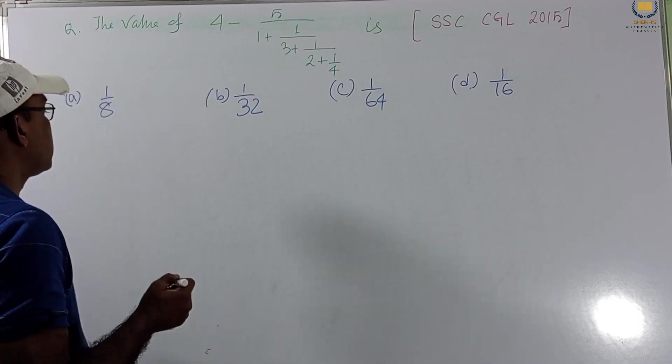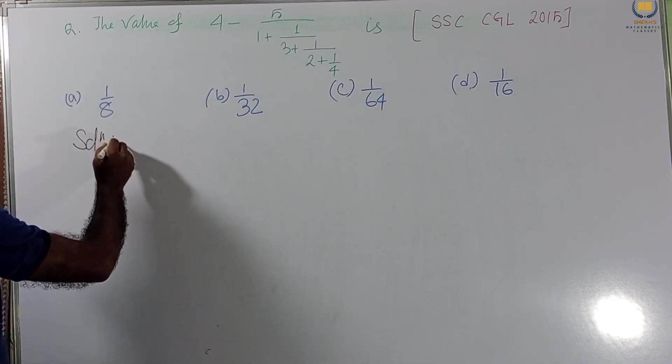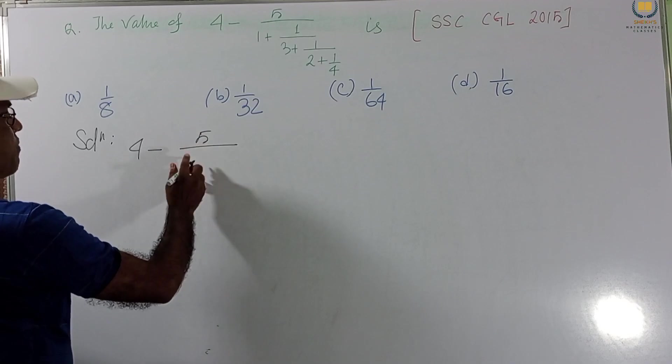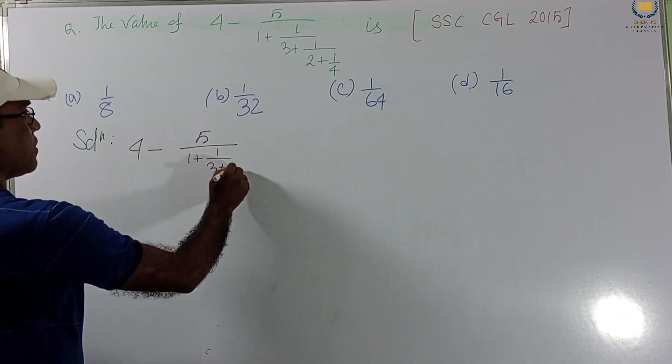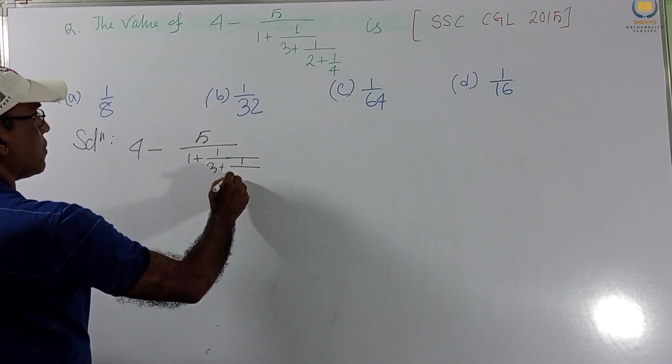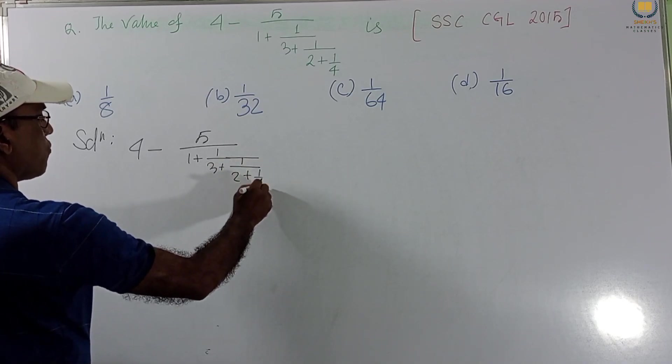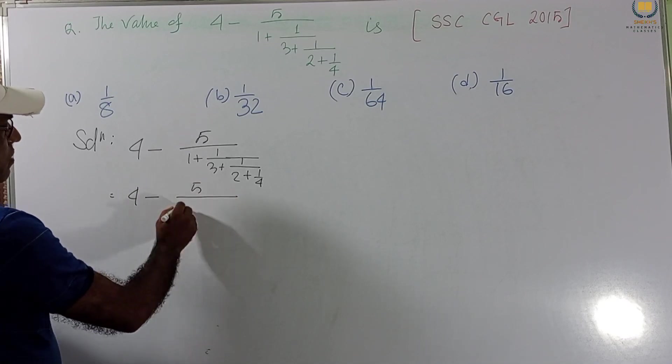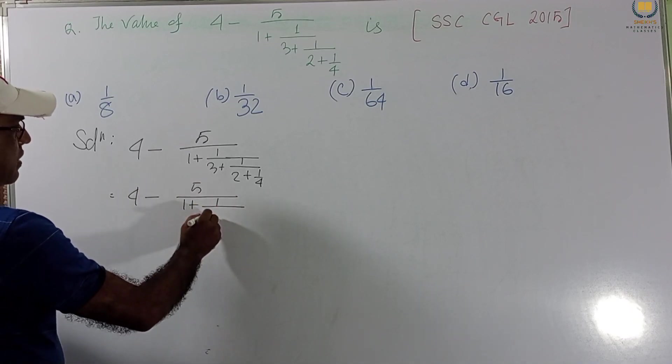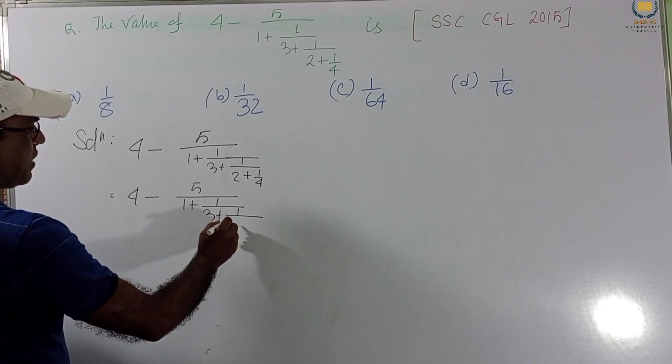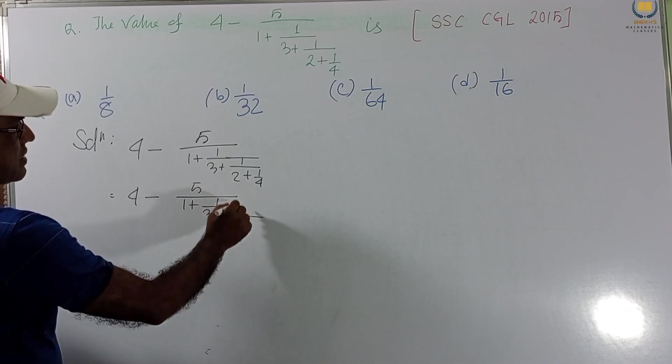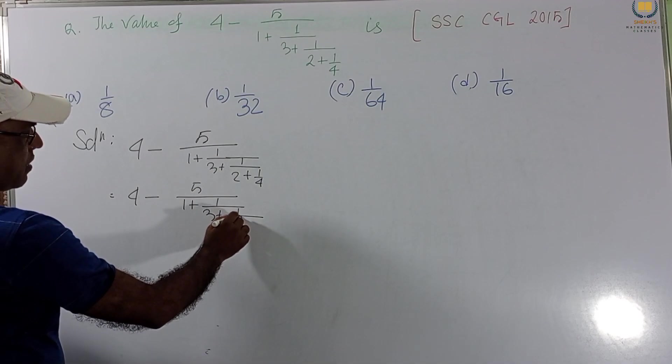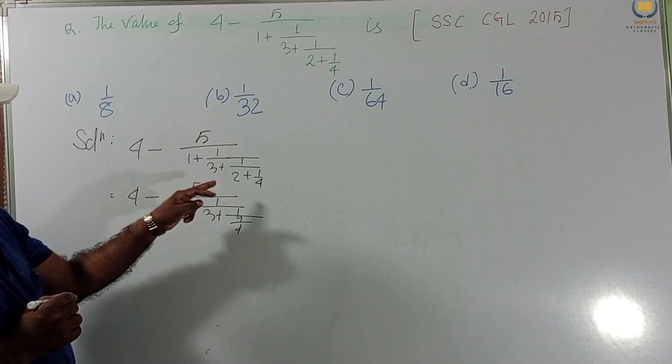Now, solution is set. So, we rewriting this one for our convenience. 5 by 4 minus 5 by 1 plus 1 by 3 plus 1 by 2 plus 1 by 4. We get this. So, this will be 4 minus 5 by 1 plus 1 by 3 plus 1 by. This LCM, this denominator is 1. LCM is 4. 4 to 8. 9. 9 by 4 we get.